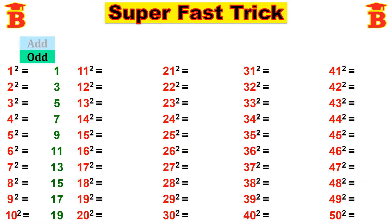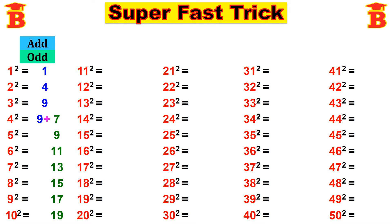Next step: add 1 by 1. First take 0. 0 plus 1 is 1. This 1 add with next number: 1 plus 3 gives 4. This 4 add with next number: 4 plus 5 gives 9. This 9 add with next number: 9 plus 7 gives 16. This 16 add with next number: 16 plus 9 gives 25.